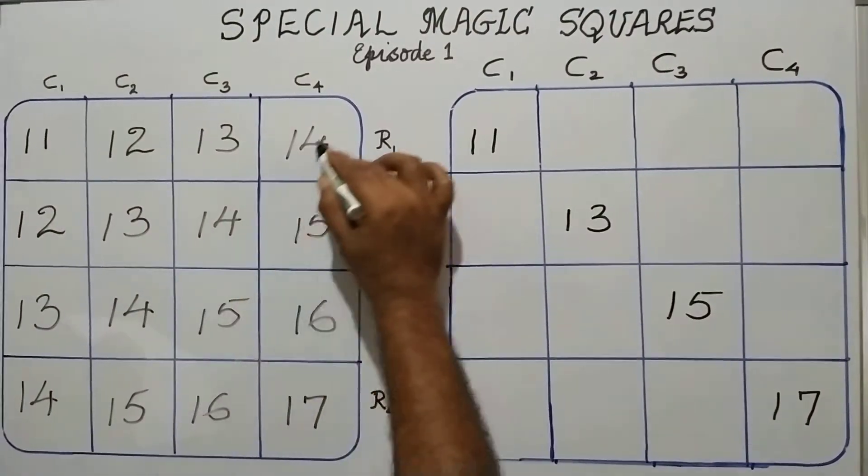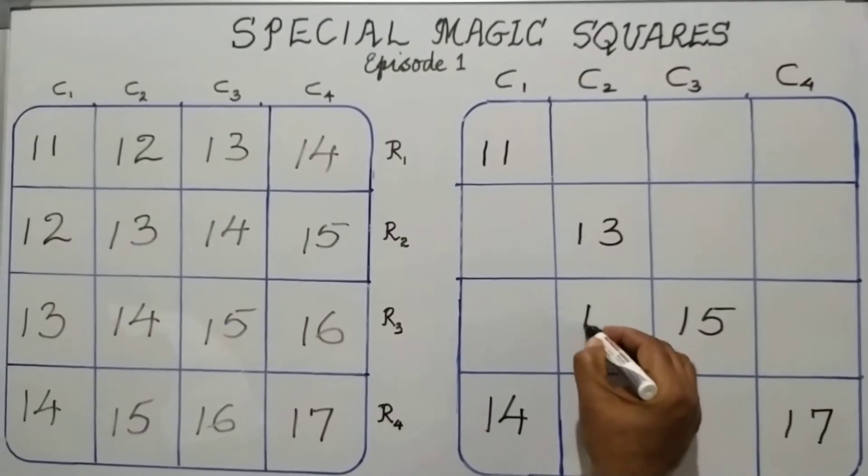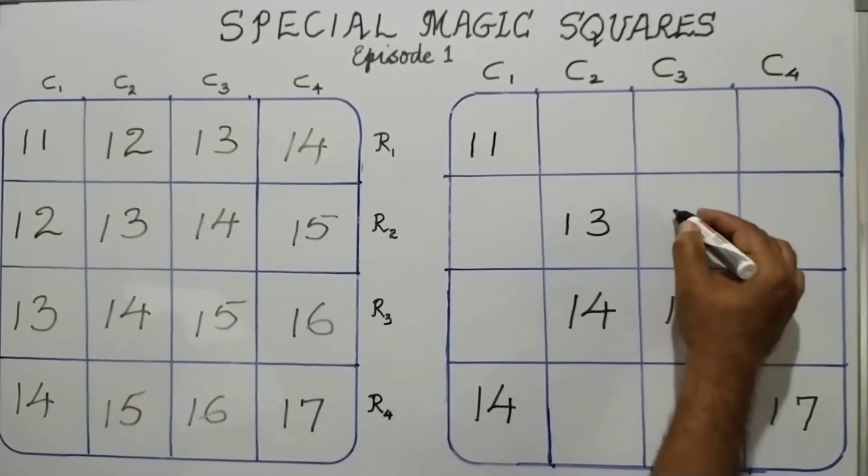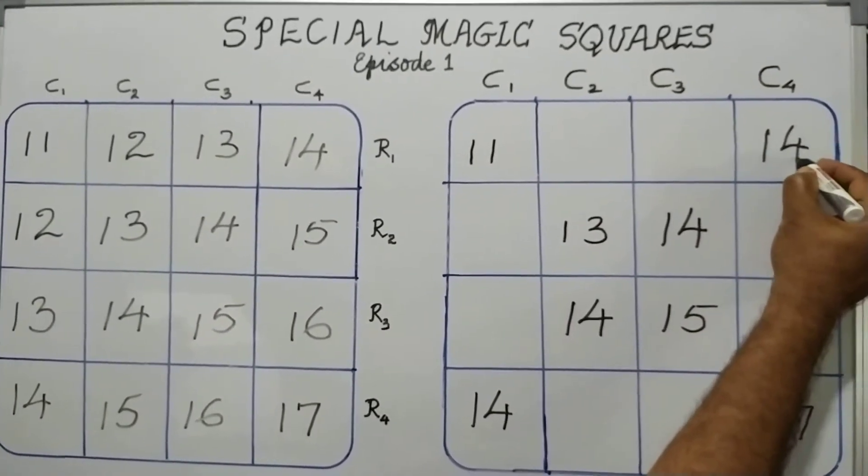The secondary diagonal elements also, I will retain as is. The secondary diagonal elements in the base square are 14, 14, 14, and 14.